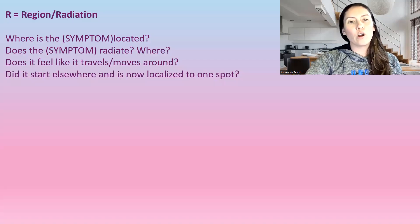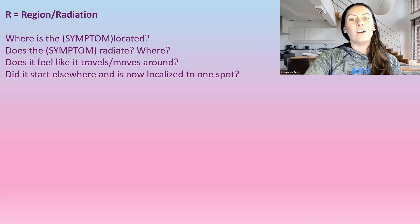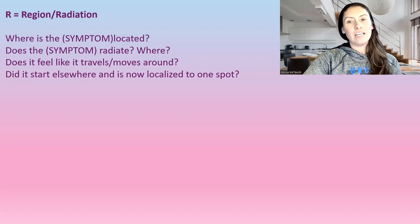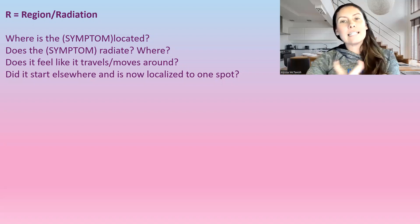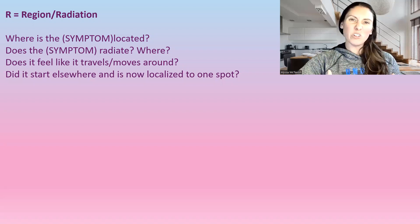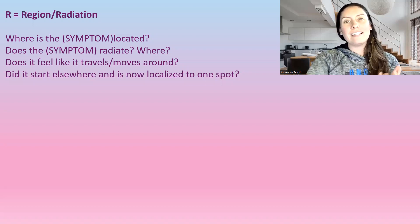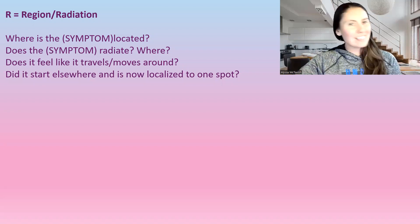R stands for region or radiation. Where is the symptom located? Does the symptom radiate? If it radiates, where — down the arm? Does it feel like it travels or moves around? Did it start in one location and is now in a different location?